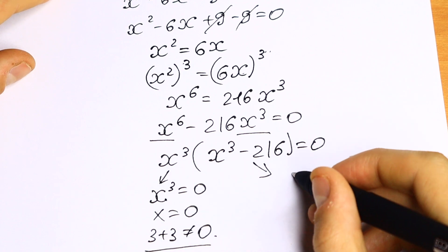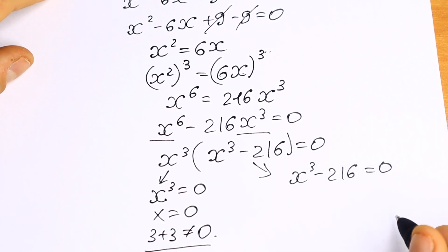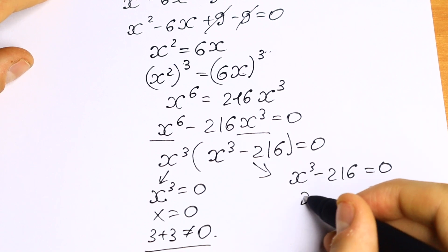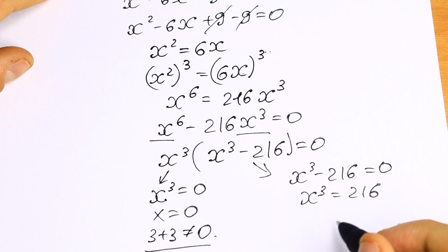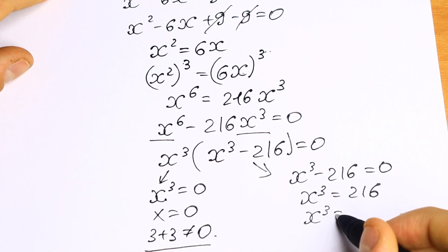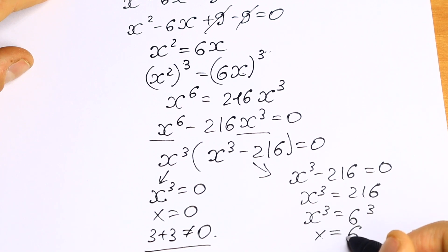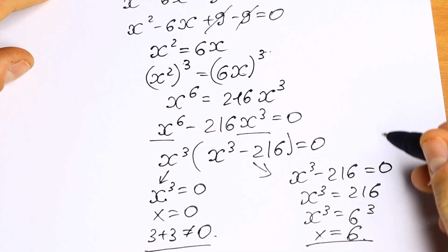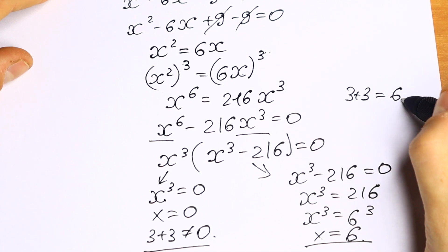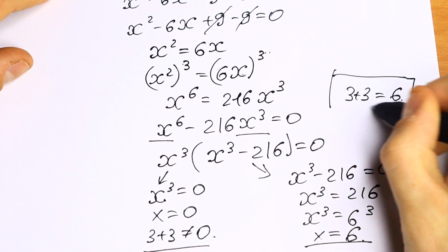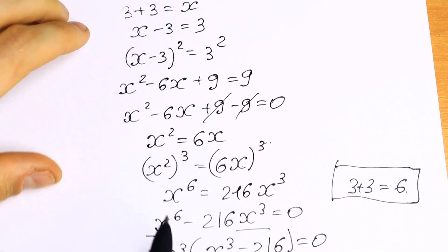But we have the second one. We have x cubed minus 216 equal to 0, and from here x cubed equal to 216. We can easily write that x cubed equal to 6 cubed, and x equal to 6. This will be our answer because 3 plus 3 equal to 6. If you use this method as well to find 3 plus 3, this is really good.